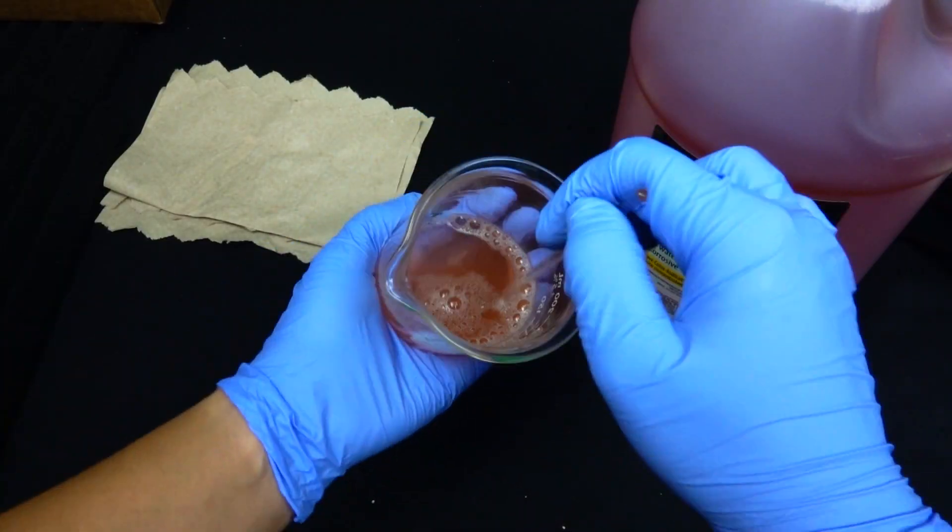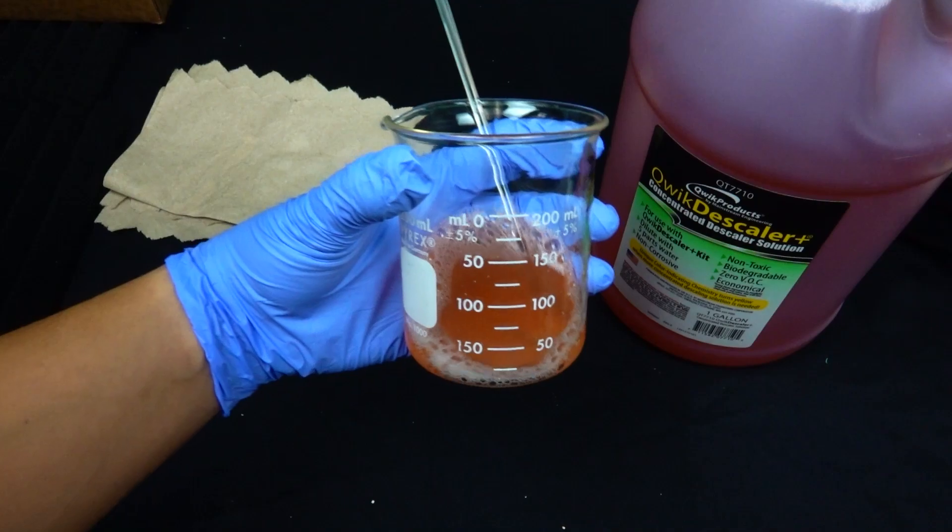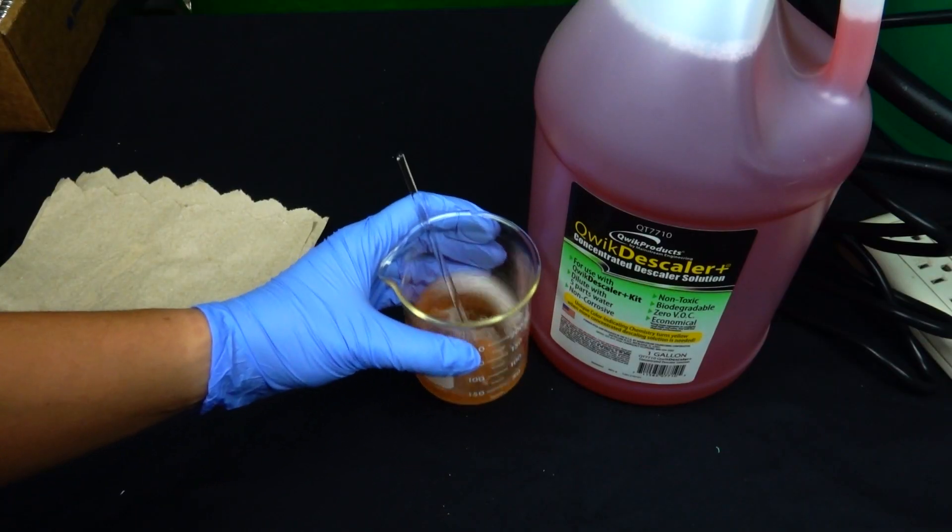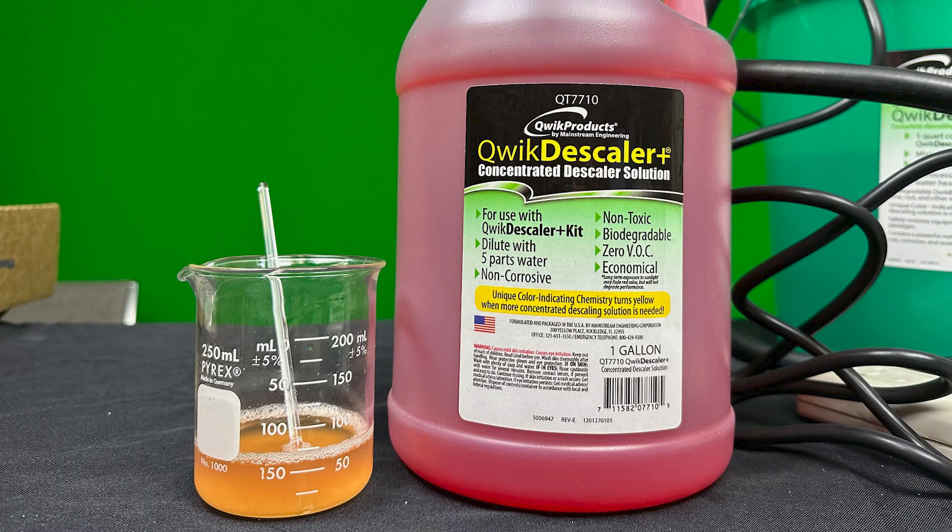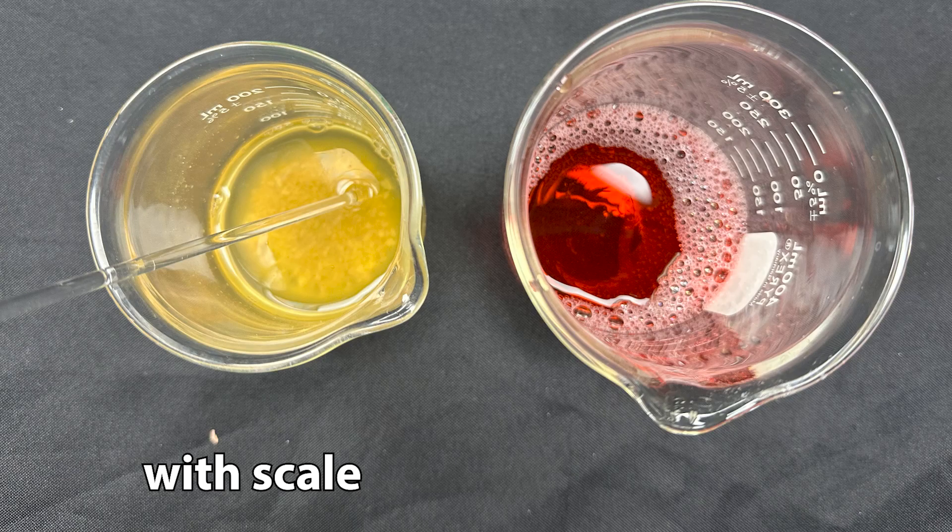After a few minutes of stirring, the solution starts to turn yellow. This is letting you know that more red solution is needed to keep on cleaning the system. Notice what our quick descaler looks like with scale and without.